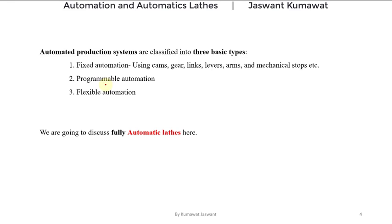The third type of automation is flexible automation, which is an extension of programmable automation. In programmable automation, non-productive reprogramming time is significant and expensive. In flexible automation, the variety of products is accommodated with limited changeover time. The reprogramming of the machine tool is done separately on another computer system, allowing production of a mixture of different products one after another. As per our syllabus, we will study automatic production systems consisting of fixed automation or hard automation.